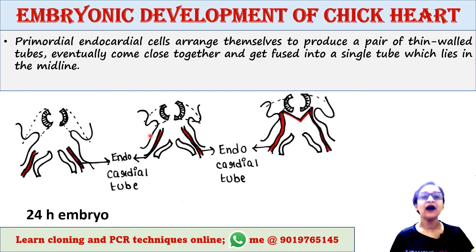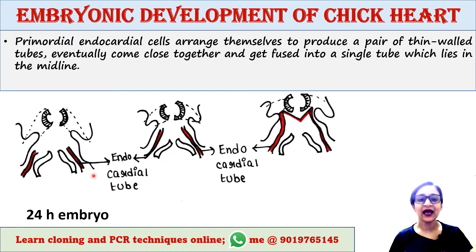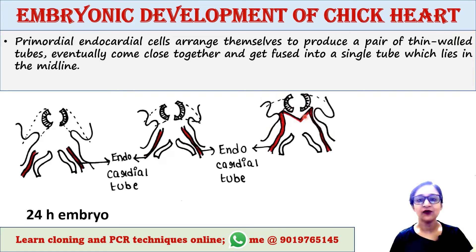After some time, the primordial endocardial cells arrange themselves to produce a pair of thin-walled tubes. The paired endocardial tubes then come close together and finally fuse into a single tube, which is found in the midline of the embryo.